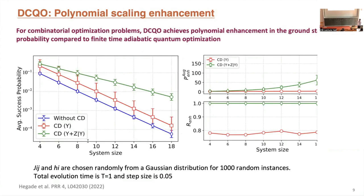For the problem of finding the ground state of the spin glass Hamiltonian, we introduced the simplest first-order counter-diabatic term and noticed a polynomial scaling enhancement for finite-time evolution compared to not using it. The fidelity and success probability decrease exponentially with system size for a fixed time, as expected for this NP-hard problem, but the exponential factor for the counter-diabatic evolution is smaller than for the digitized adiabatic evolution — that is the polynomial scaling enhancement.